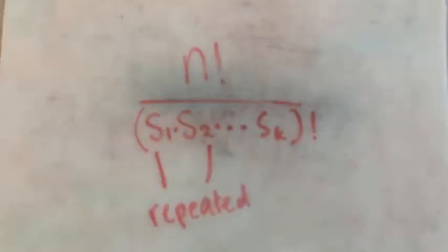The formula for permutations with repetition is N factorial over S1 times S2 times SK factorial. The number of distinguishable PR of N objects where one object is repeated S1 times S2 times and so on is that formula.